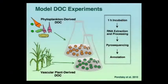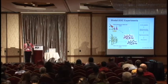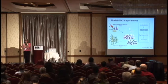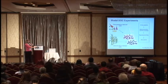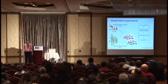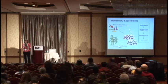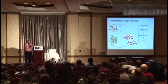Rachel made two model DOC pools composed of compounds we think are important sources of organic matter. She grew up coastal phytoplankton and extracted organic carbon from those living cells for the phytoplankton-derived DOC. She also collected senescing spartina, a vascular plant extremely abundant in the marshes lining the system. When collecting the first two samples, she also collected two additional ones — one with phytoplankton-derived DOC added, one with vascular plant-derived DOC — bumping up carbon content by about 20%, then waited one hour before continued processing.